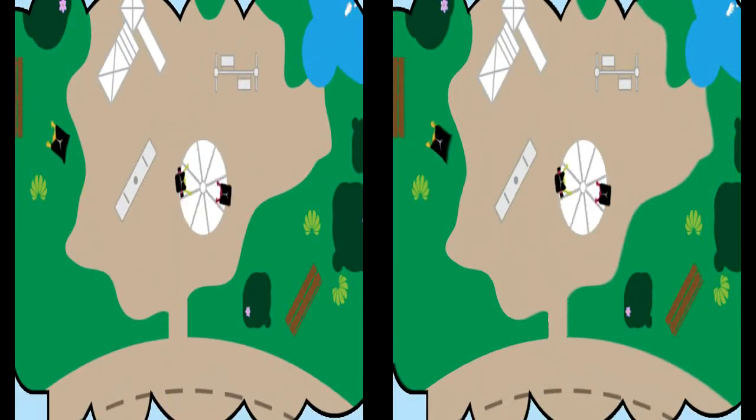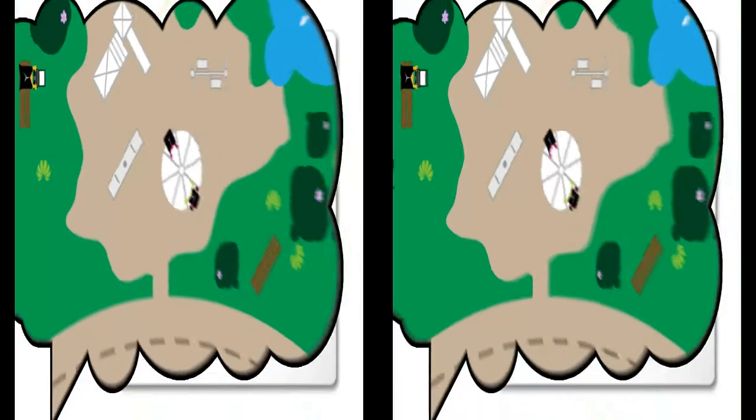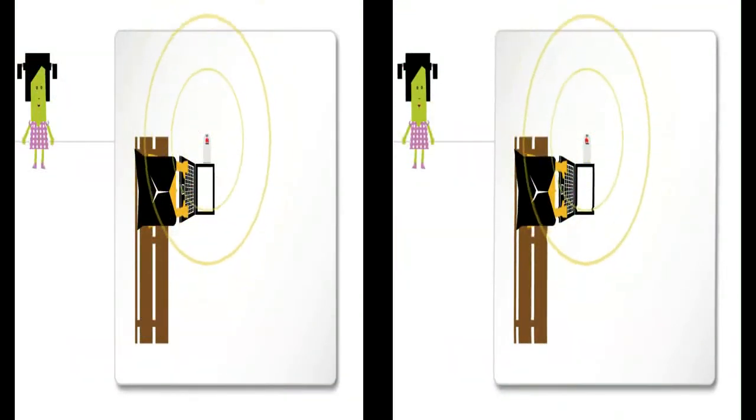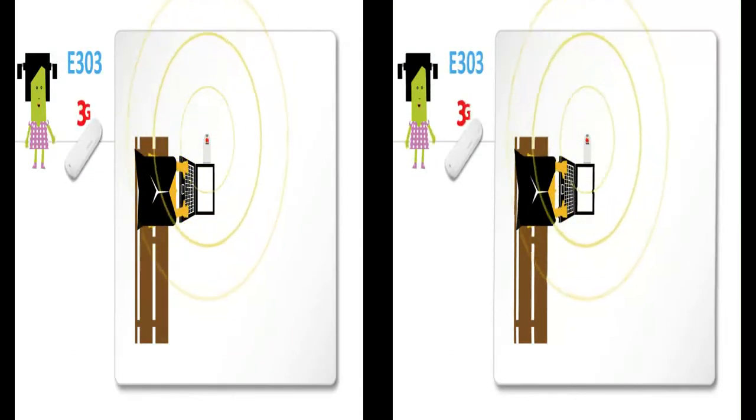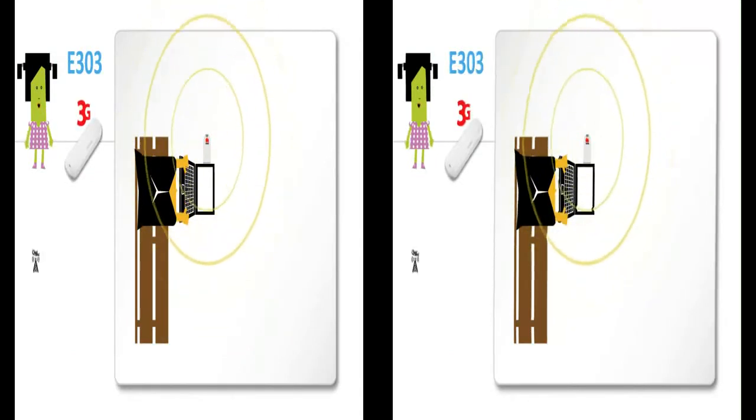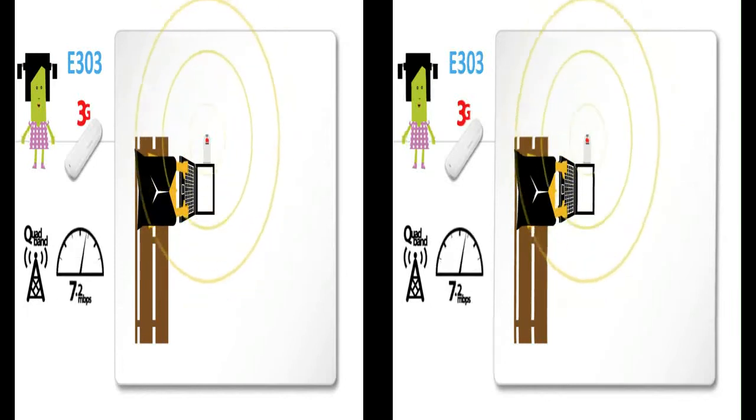But she also runs a small online business making and selling things. While we are at the park, mom uses the E303 3G modem with her laptop to check in on her business. With its 3G quad band network range and 7.2 megabytes per second download speed,